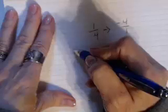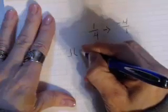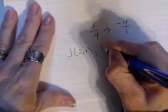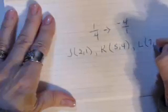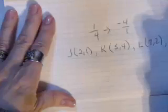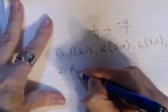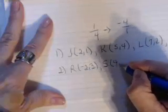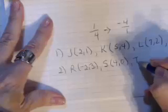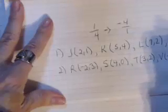These are the problems I'd like you to do. J is the ordered pair (2,1), K is the ordered pair (5,4), L is the ordered pair (7,2), and M is the ordered pair (2,-3). The second one: R is the ordered pair (-2,3), S is the ordered pair (4,0), T is the ordered pair (3,2), and V is the ordered pair (-3,-1).